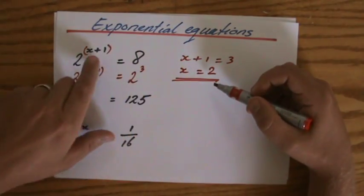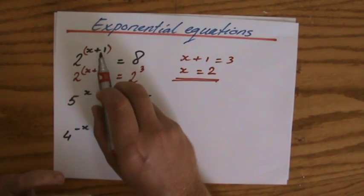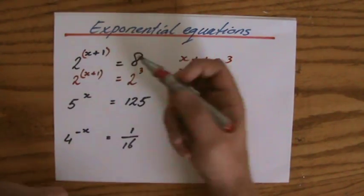And if I substitute that in the original exponential equation, so 2 to the power 2 plus 1 is 3. 2 to the power 3 indeed is 8.